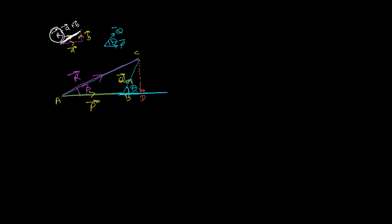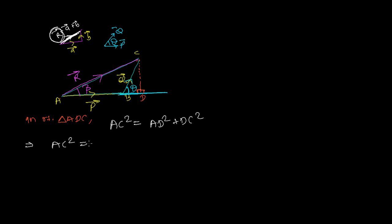Triangle ADC is a right-angled triangle. From the Pythagorean theorem, the square of the hypotenuse equals the sum of the squares of the base and the perpendicular. So, AC² = AD² + DC². And since AD = AB + BD, we can write: AC² = (AB + BD)² + DC².